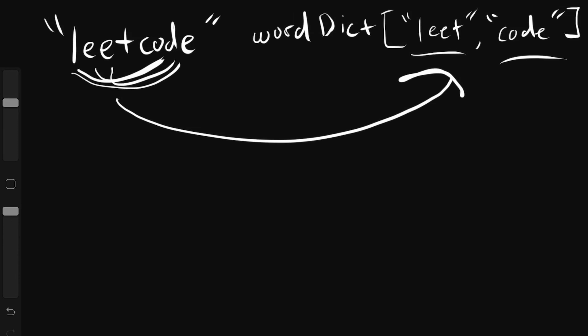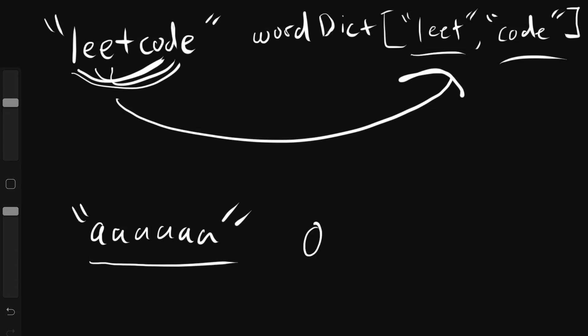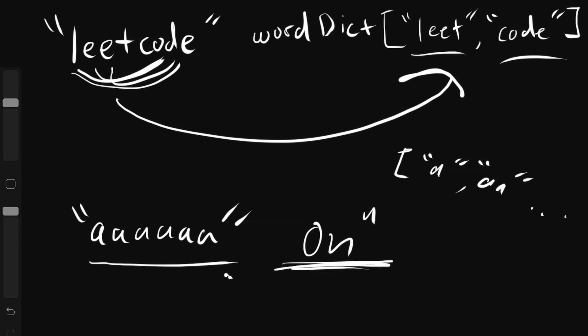This isn't the most efficient approach. If you take it to the extreme — imagine an input string like 'aaaaa' — this would take upwards of O(n^n). It gets really bad because if we have a word dict with different variations of 'a', we'd be doing a huge amount of work calculating all those combinations. This is definitely not a runtime we ever want to strive for.